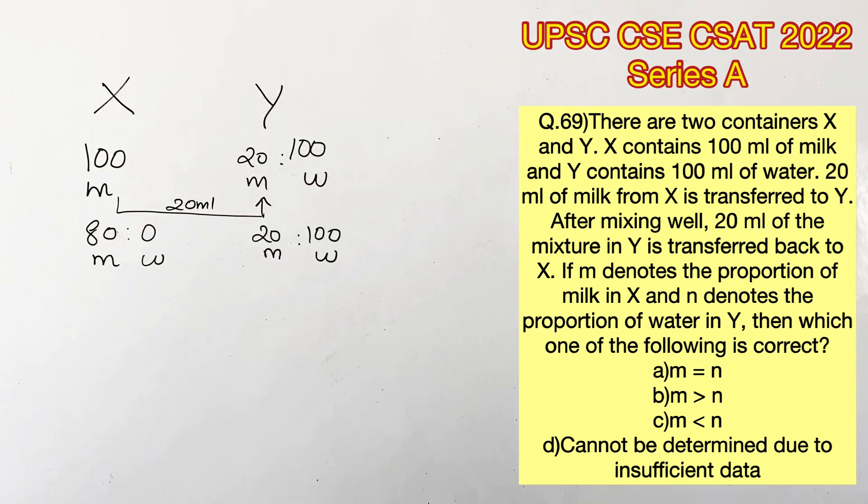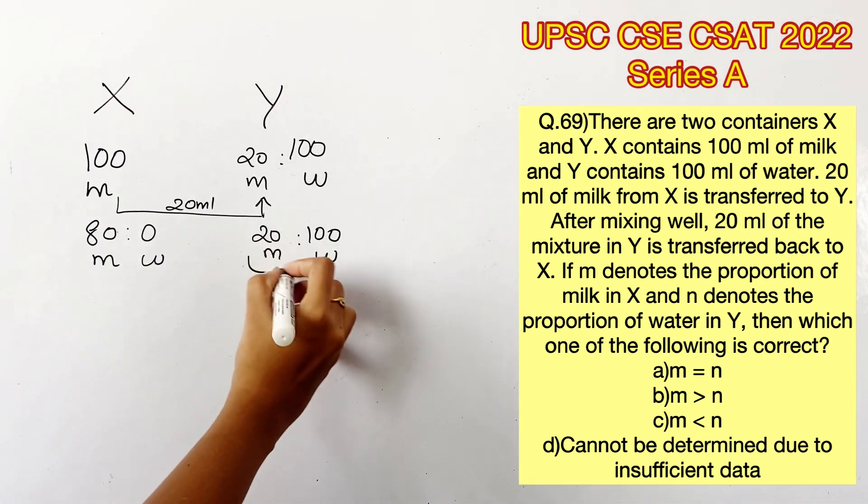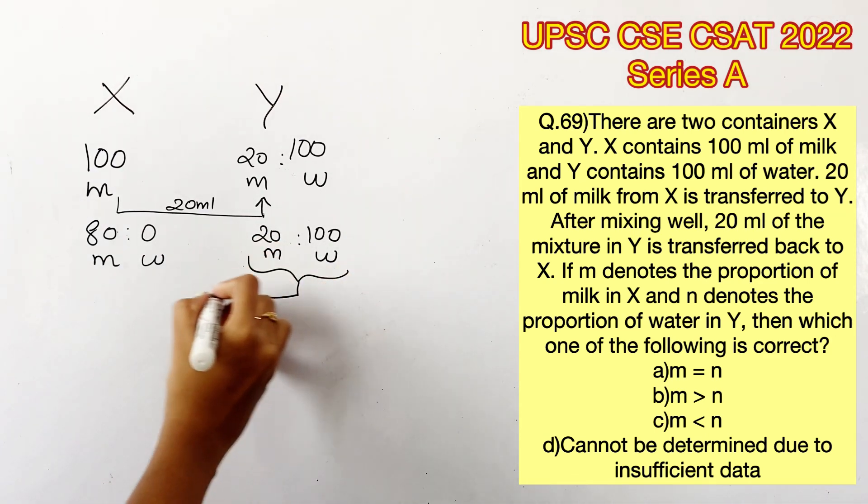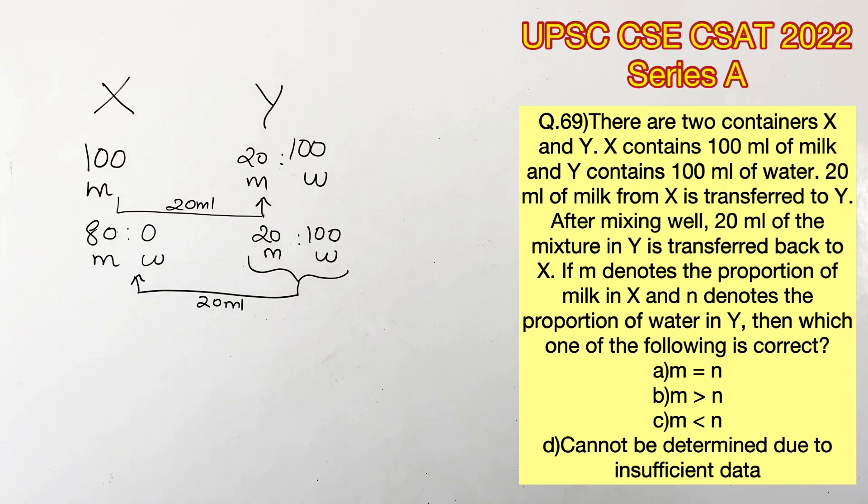Now from this mixture, 20 ml is transferred back to X. But this mixture has both milk and water, so in 20 ml of mixture we have to find out the amount of water and milk present.